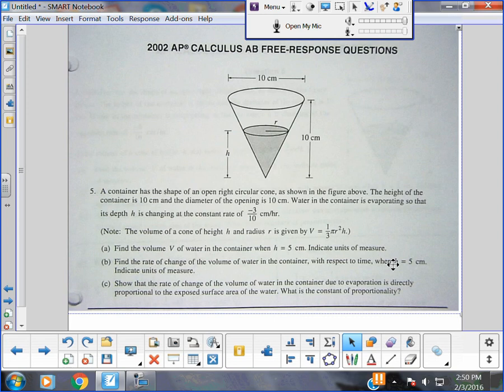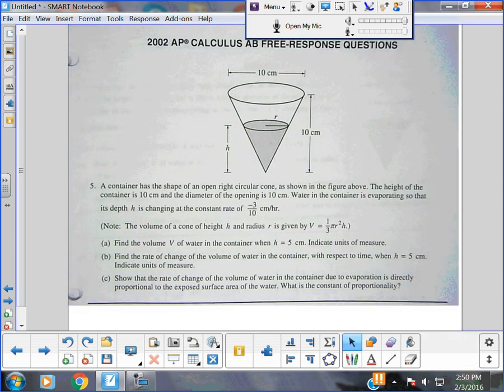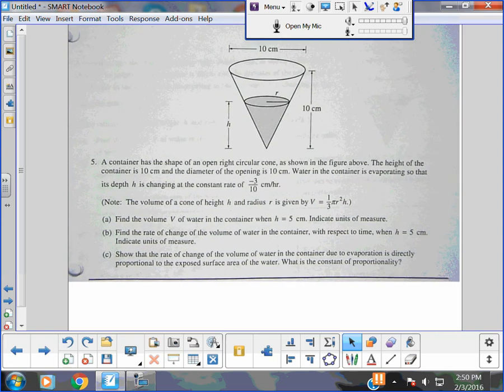If we use R, H, and V, which we should use, they just gave us dH/dt, right? So we now know this is a related rate because it's something for time. Then they give us a note about the volume and it says find the volume of the water in the container when H equals 5 centimeters. So the first one is not even a calculus problem really, it's a geometry problem.